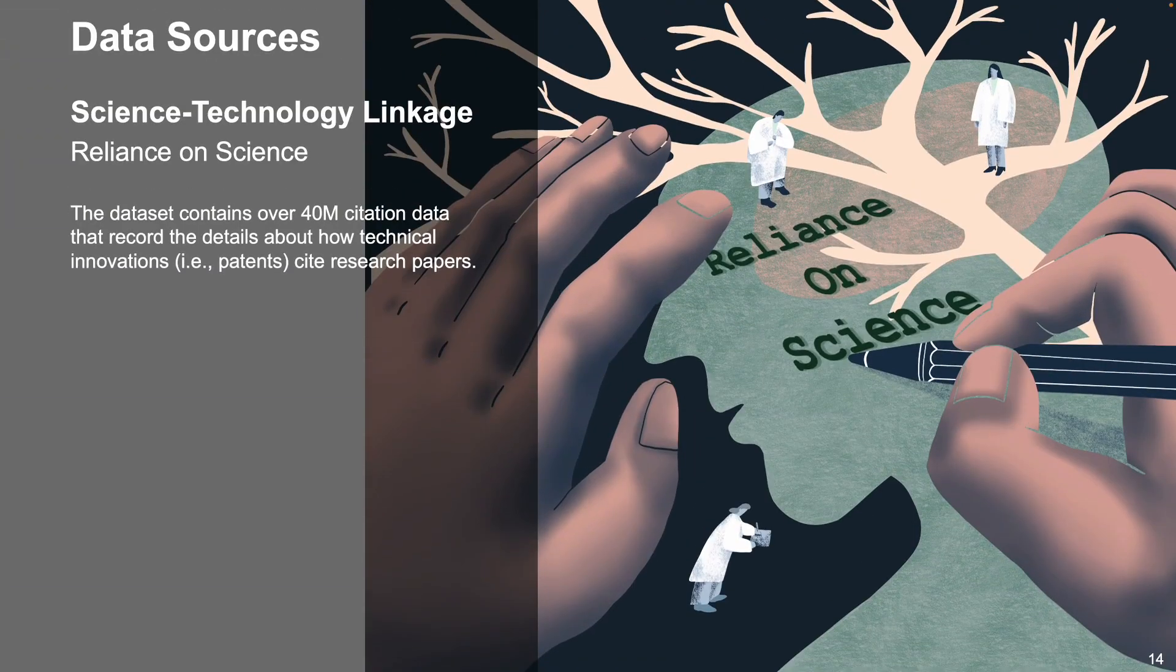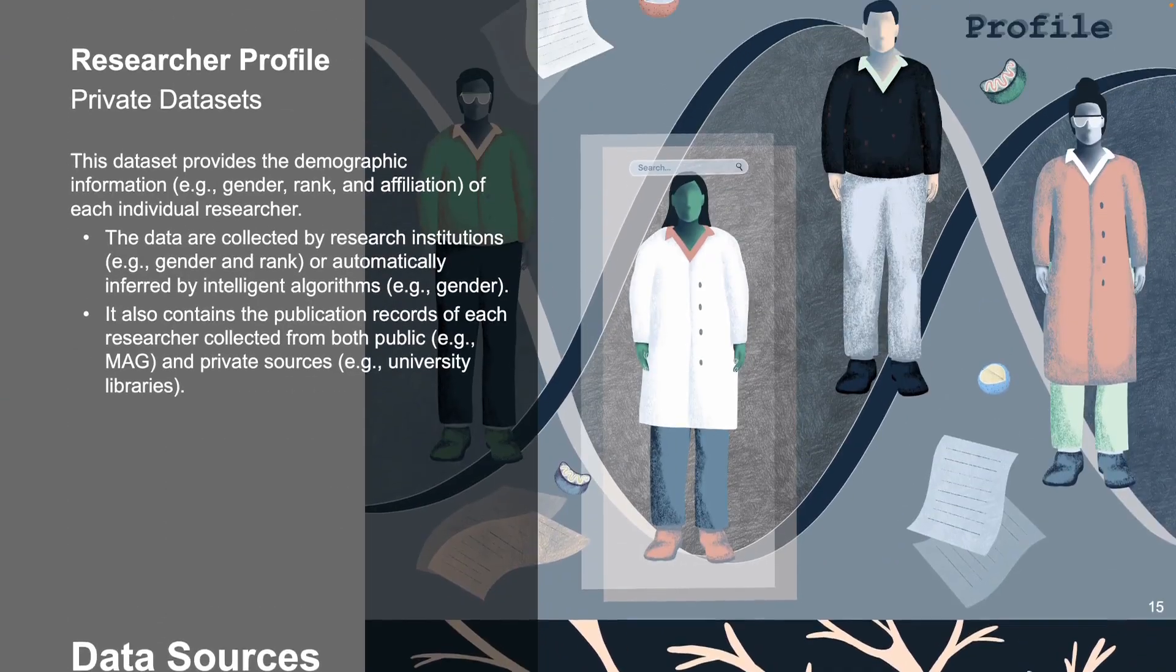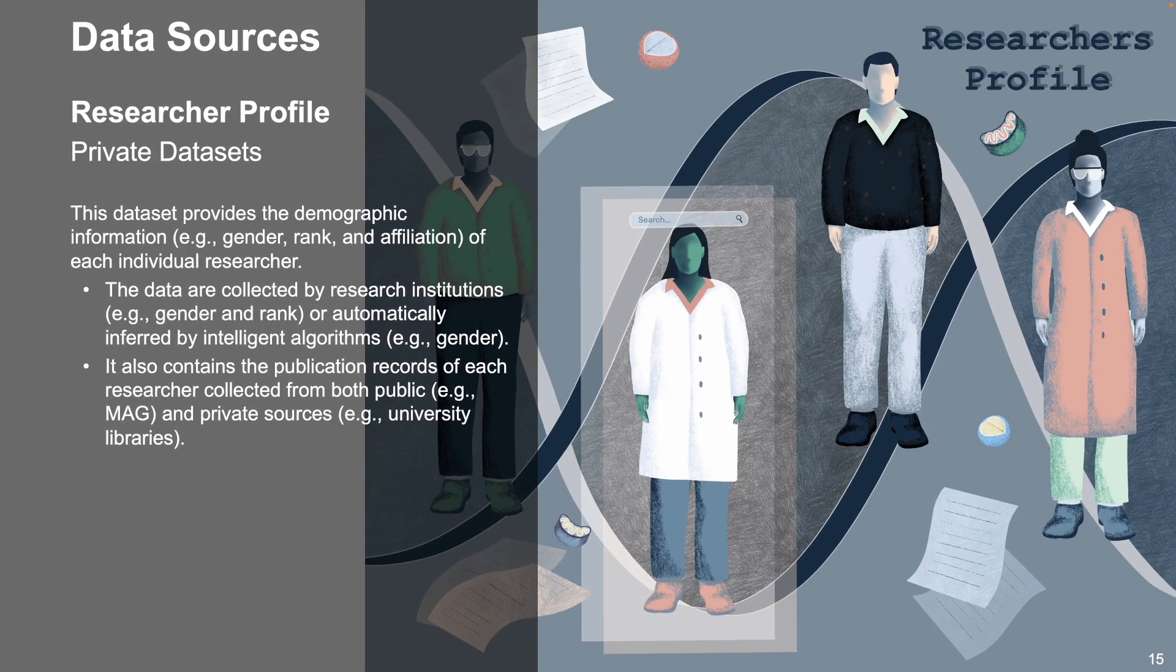The most important data source is called Reliance on Science. It includes more than 40 million citations from patents to papers. Finally, we use both MAG and private datasets from our university HR office to incorporate the demographic information of researchers.